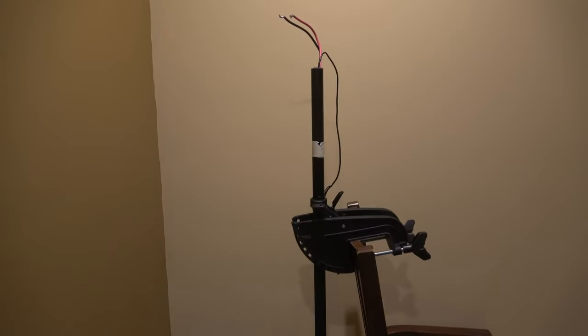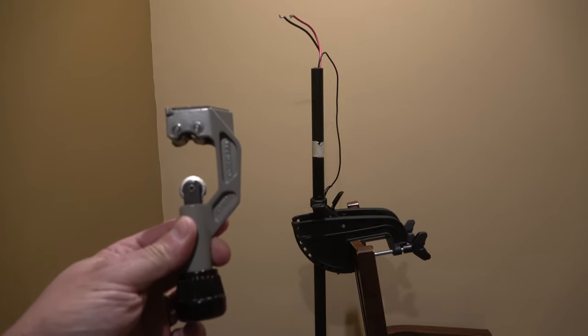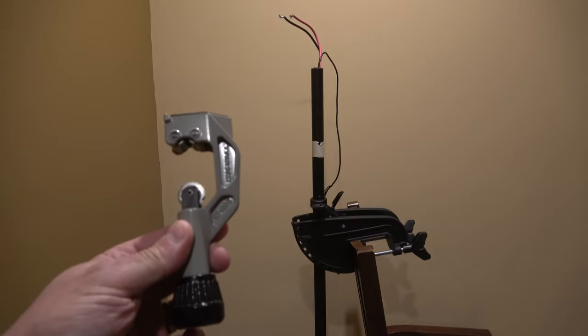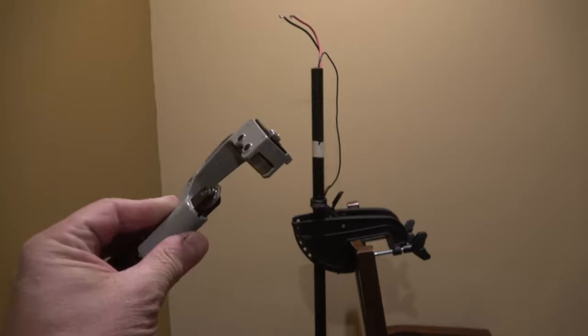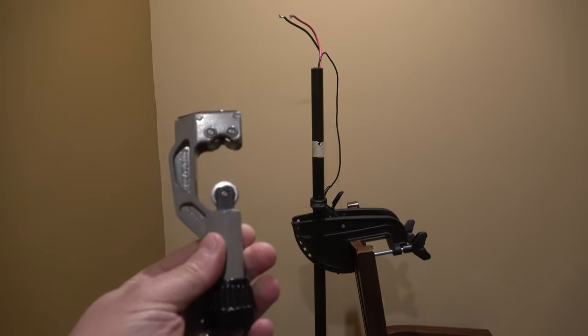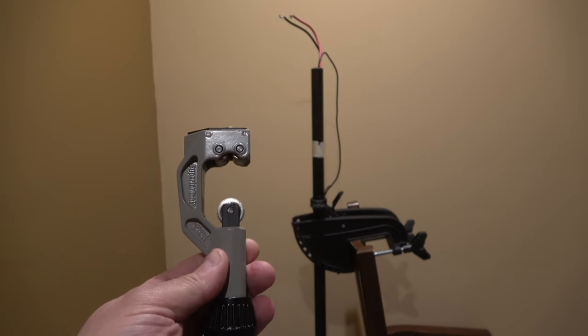In order to shorten the shaft the easiest and cleanest way possible you will need one of these. This is a rotating pipe cutter. You can get one of these at Home Depot, Menards, Lowe's, pretty much any hardware store but you want to get the larger size. This one will accommodate up to I think one and a quarter inches.